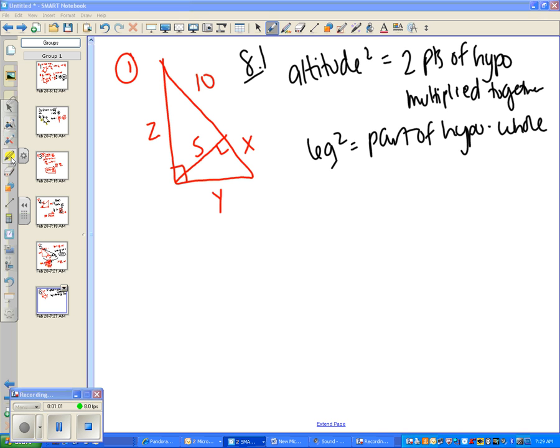So altitude is this segment right here. If we square it, 5 squared, it should equal the two parts of the hypotenuse multiplied together. And if you look at this, this is the hypotenuse of the whole right triangle. So 5 squared should equal 10 times x.